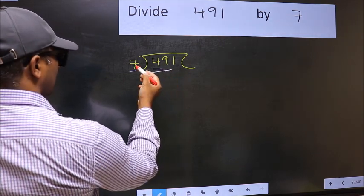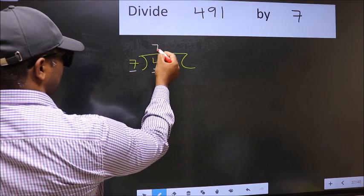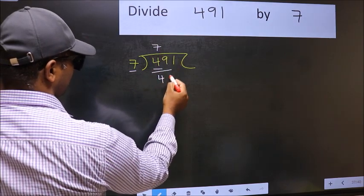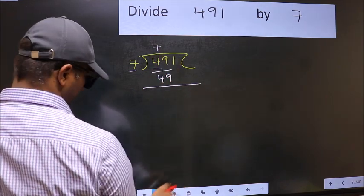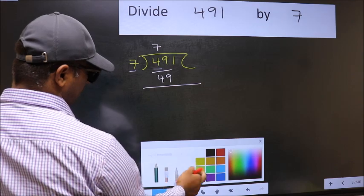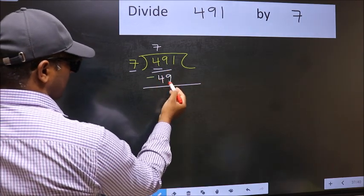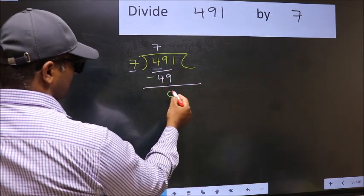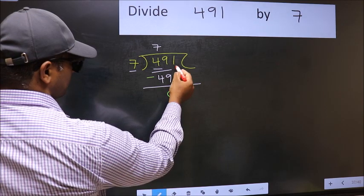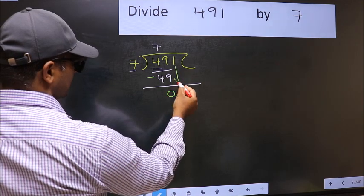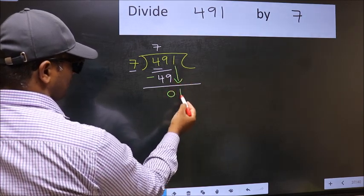When do we get 49 in the 7 table? 7 times 7 is 49. Now you should subtract: 49 minus 49 is 0. After this, bring down the beside number — so 1 comes down.